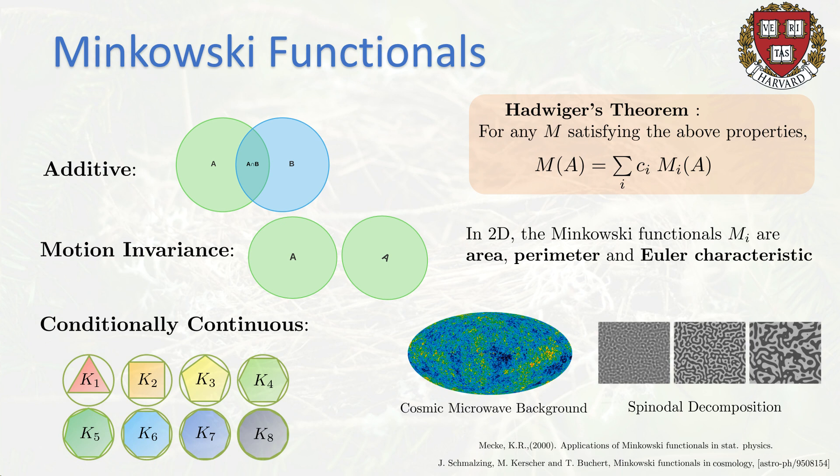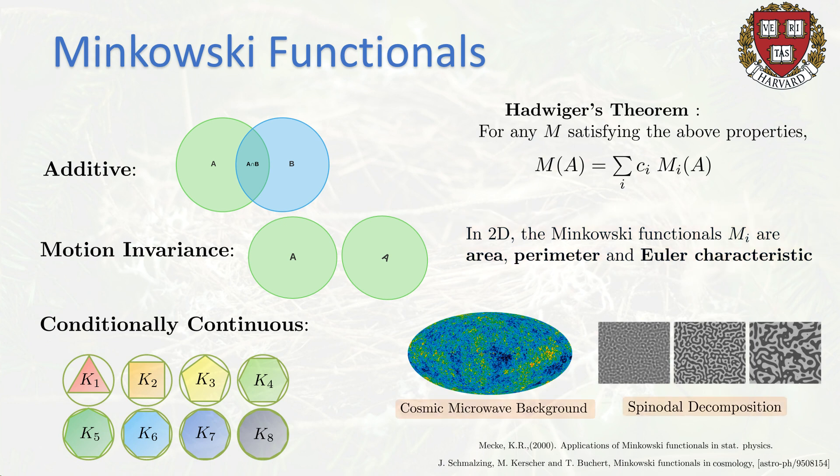In two dimensions, the Minkowski functionals are just area, perimeter, and the Euler characteristic — only three of them. Because of this generality, you find them in many different fields: they're used in cosmology for the cosmic microwave background, in soil samples, and in statistical physics.